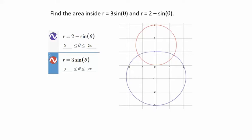In this video we're going to look at using integrals with polar equations, and this one is a little bit tricky. You have to really visualize what's happening. We want to find the area inside r equals 3 sine theta and r equals 2 minus sine theta — the area inside both of these curves. We have the purple one and the red one, and inside both is this area right here that we want to find.